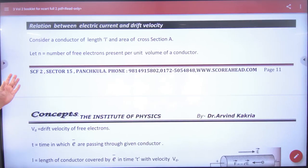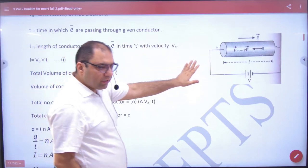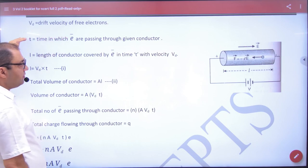In your CVSE booklet, the relation between electric current and drift velocity. I have drawn this same conductor. Vd is velocity of drift, t is the time.